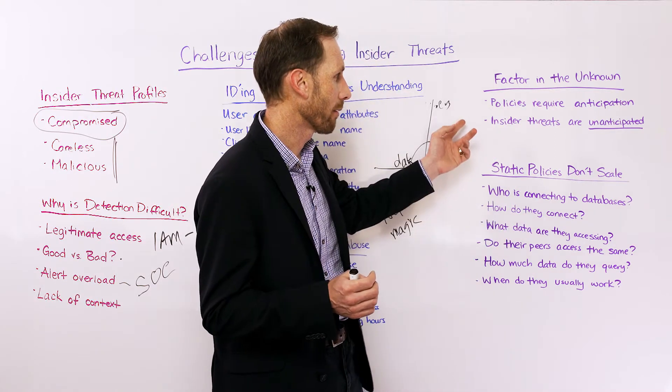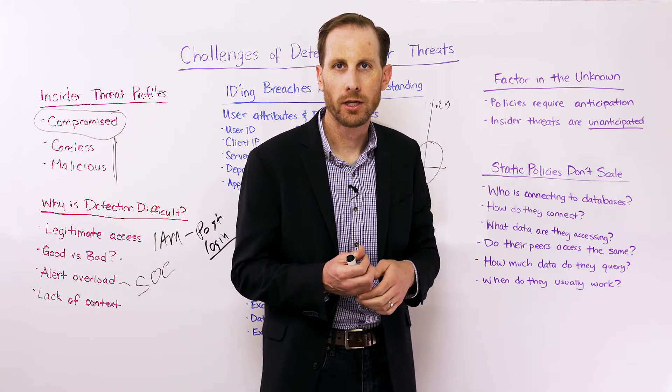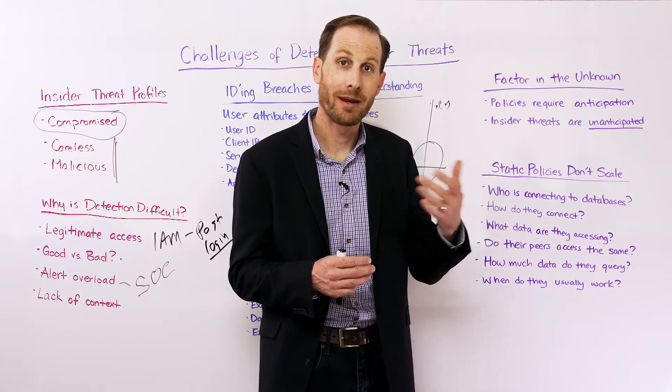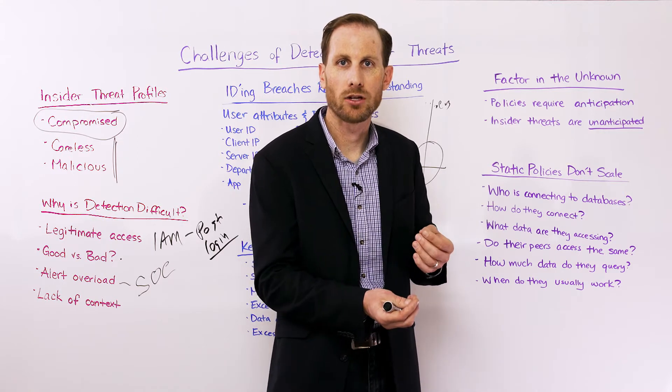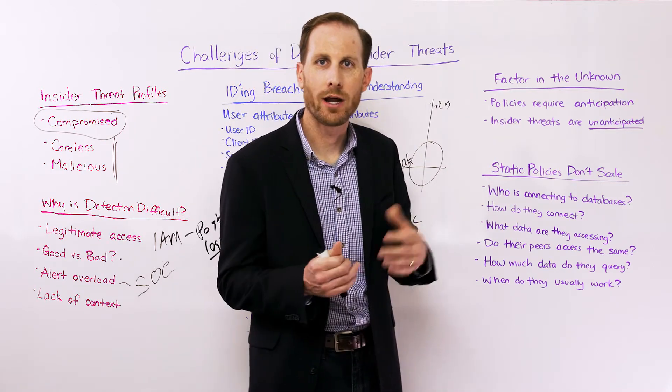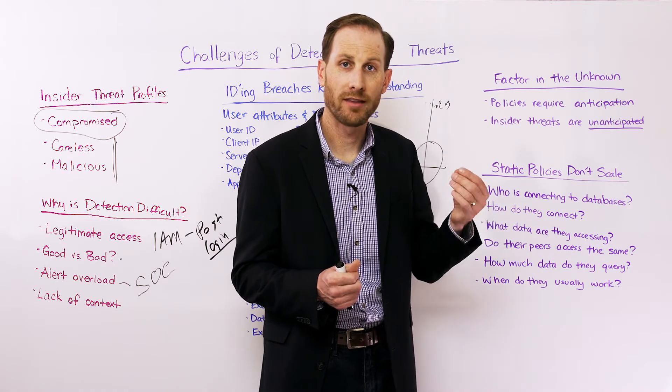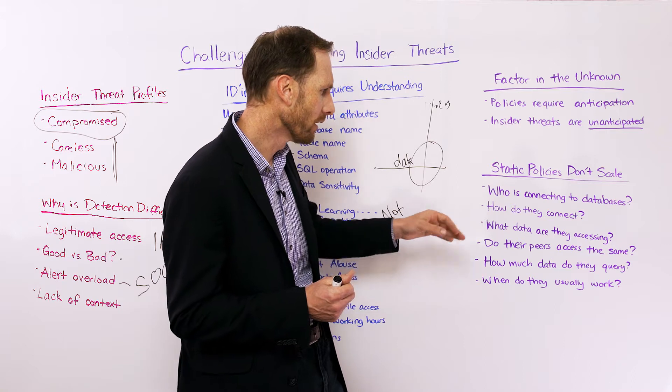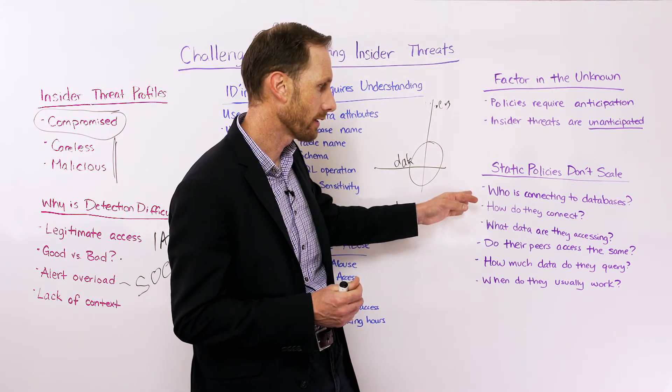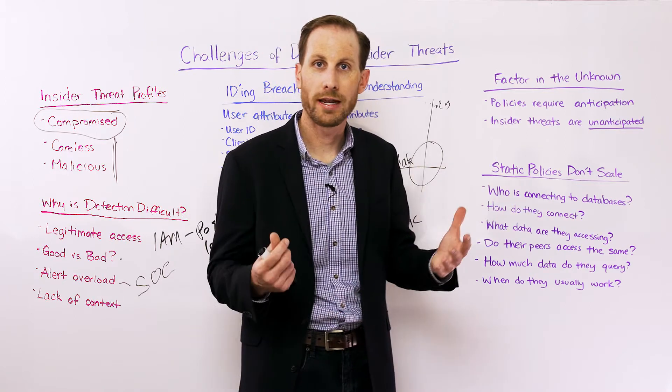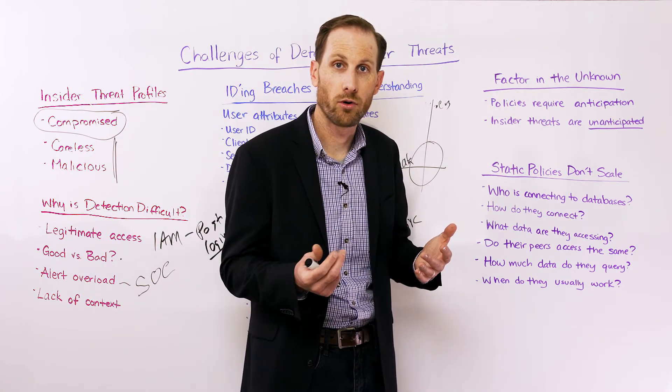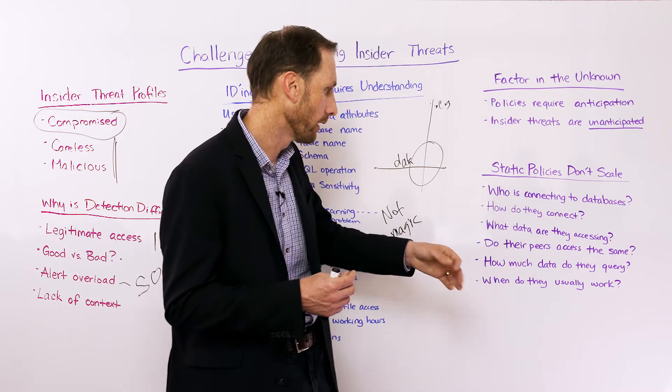We have to think about and anticipate every single mutation of a policy and every variation of how that policy would need to be created. The challenge here is now you're creating hundreds or thousands of policies, you're having to maintain those, and behind that or underneath it, the application environment is changing constantly. So it becomes an operational challenge for an organization to sustain. The other issue is a lot of times insider threats are unanticipated. So when we look at the database example and why static policies don't scale, we have to understand who's connecting to the database. How do they connect? Are they using SQL+, Toad, Aqua Data Studio, some other type of tool to connect to the database? What data are they accessing? Have I done data classification before? Do I even know the context of that data to be able to write a policy against it?